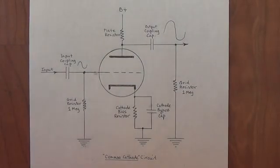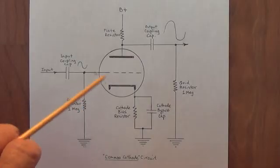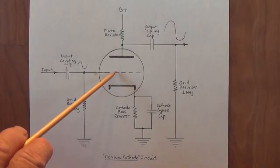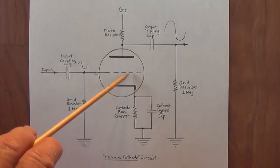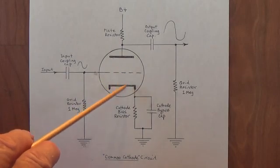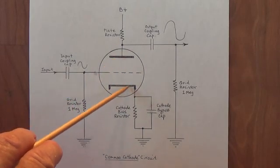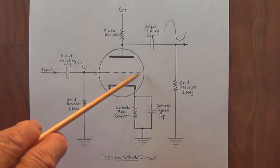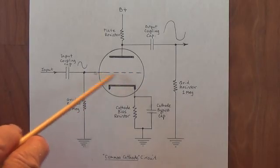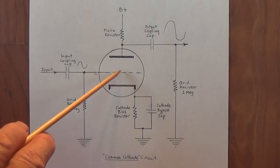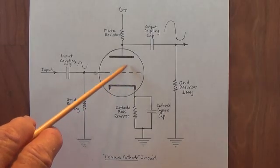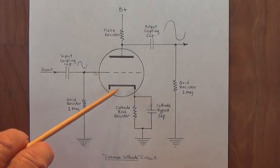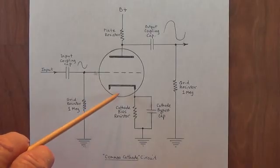Before we continue though, let's cover just a few basics. Number one, the grid in the vacuum tube is always biased a little negative and the reason for that is that we want to suppress the flow of current from the cathode to the plate. We know that the electrons here want to flow to the very positively charged plate and we have the grid in between that is charged negative with a bias voltage to keep the flow of current under control, to moderate it to a reasonable level to prevent the tube from overheating and self-destructing.